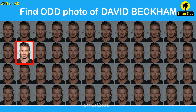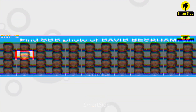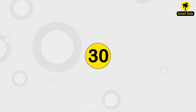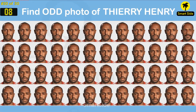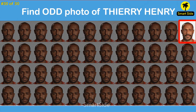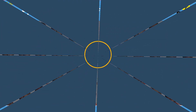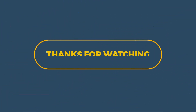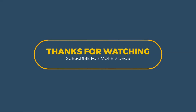The answer is this one. Question number thirty. Find the odd photo of Thierry Henry. The answer is this one.